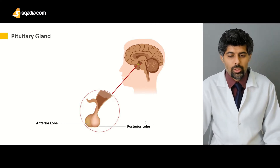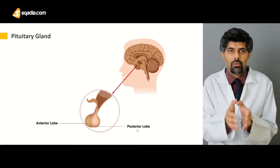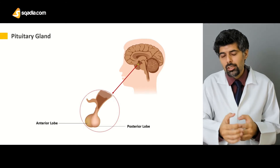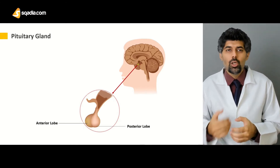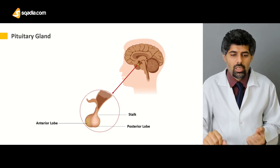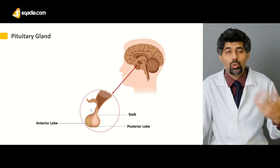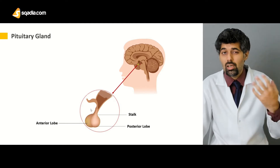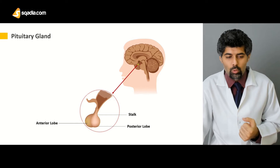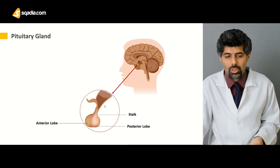The posterior lobe and both of these are arranged and named according to their position. The anterior lobe is anterior to the posterior neuronal lobe. Next we have the stalk, also known as the infundibulum, which is the structure that connects both of these lobes of the pituitary gland to the hypothalamus.